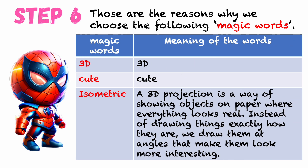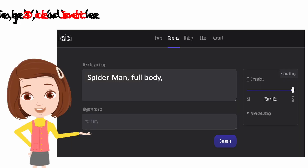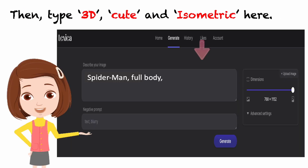The meaning of 'isometric' is: a 3D projection is a way of showing objects on paper where everything looks real. Instead of drawing things exactly how they are, we draw them at angles that make them look more interesting. Then, type '3D cute' and 'isometric' here.